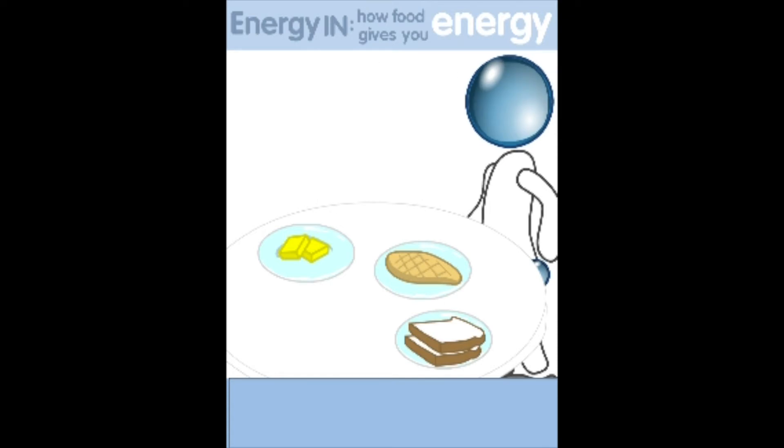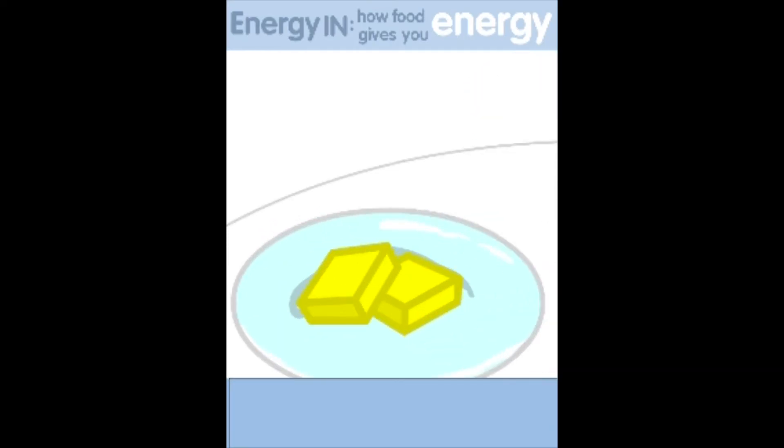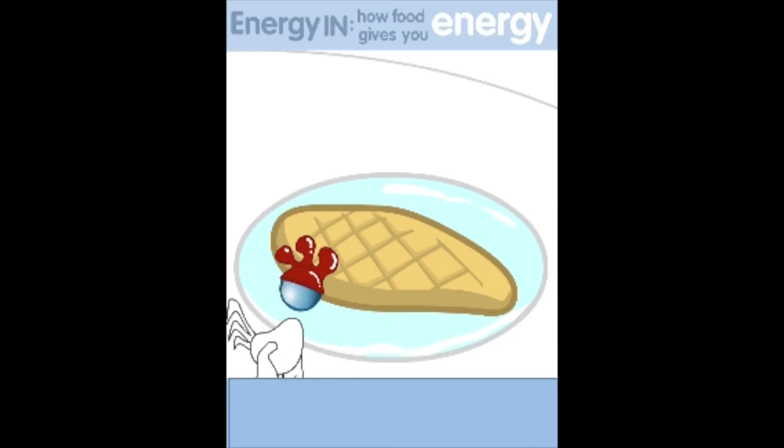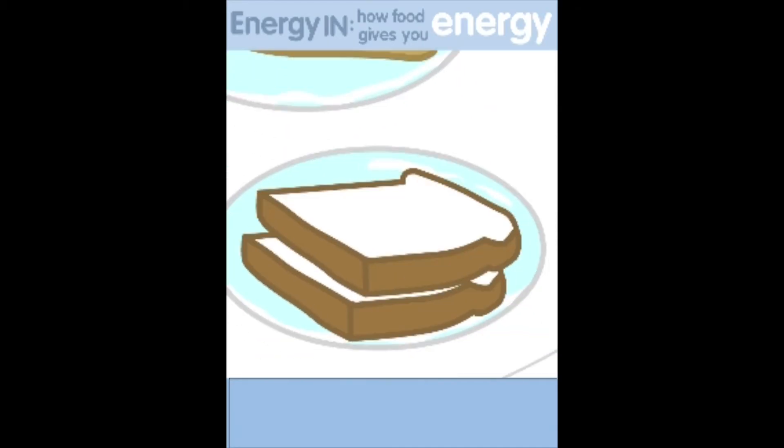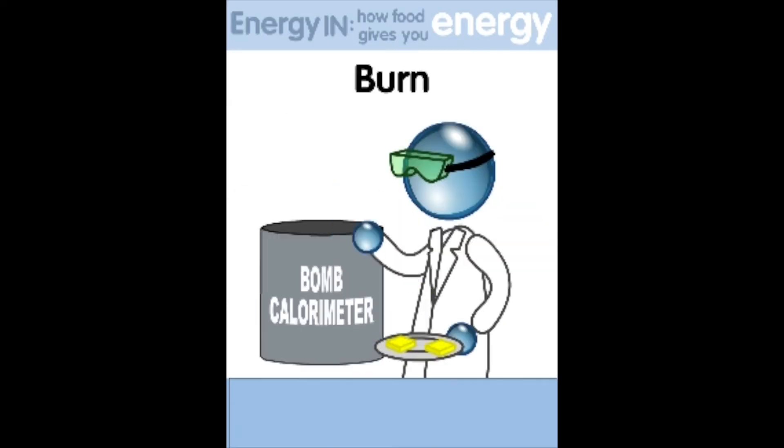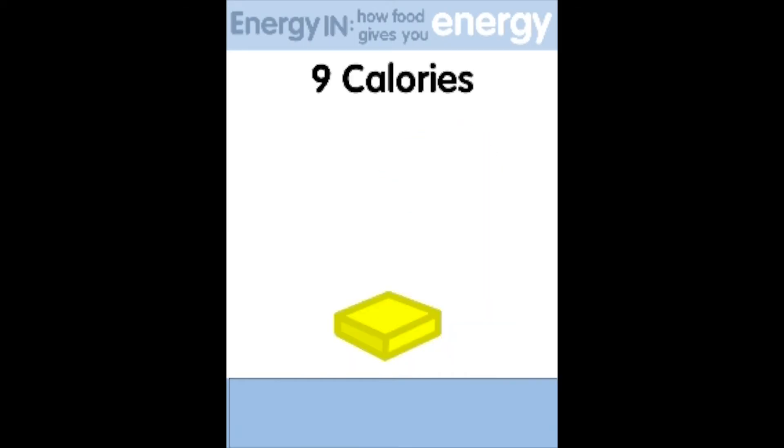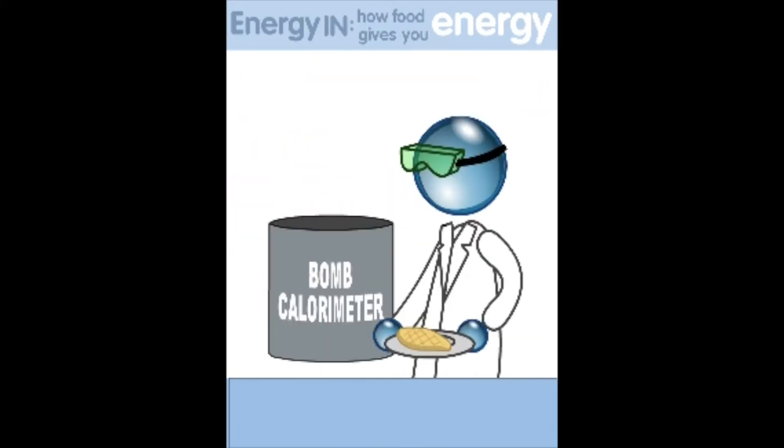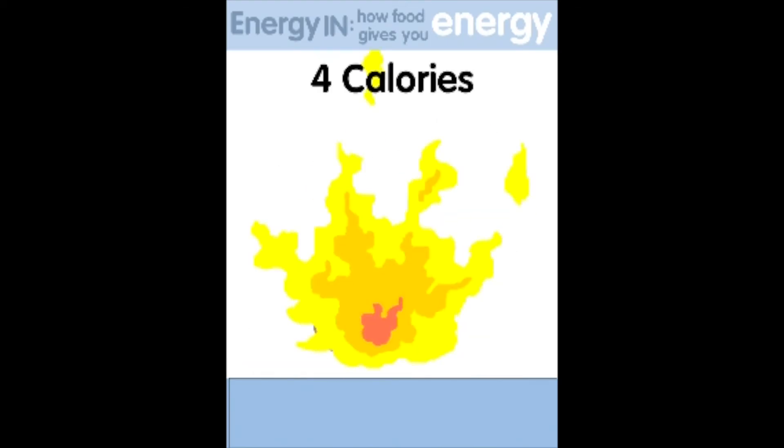Here we have butter, fat, lean meat, chicken, protein, bread, fruits, vegetables, carbohydrates. If you burn one gram of fat, you will measure nine calories of heat.